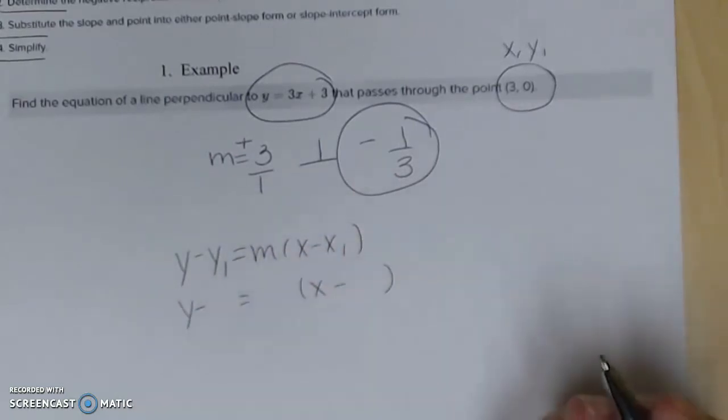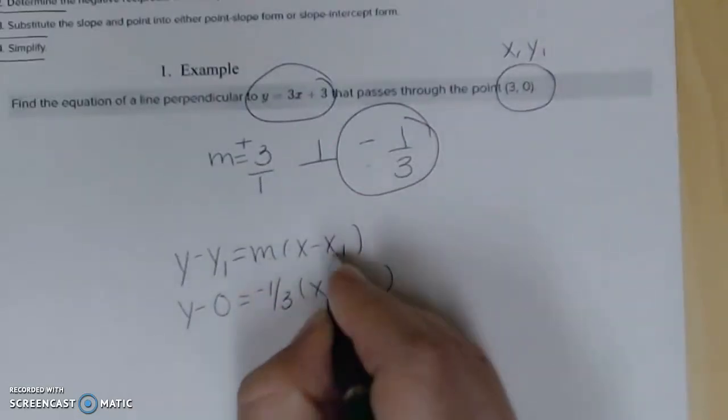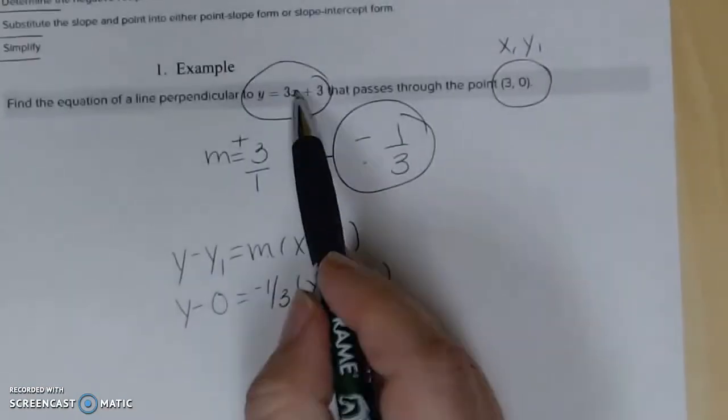I'll start with my point-slope form, so I write my equation. When you write it without the letters, I'm about to plug in. y₁ was 0, m is negative 1/3, x₁ is 3. Make sure you read the problem—a lot of students know how to plug in, but they just take the 3 and don't realize they're looking for perpendicular.